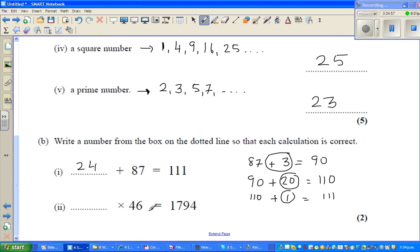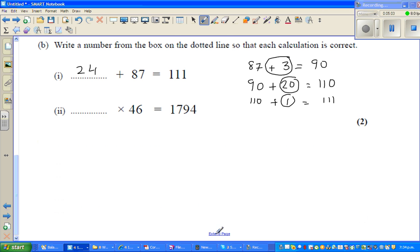What times 46 equals 1794? This dash equals 1794 divided by 46. If you're allowed a calculator, it'll be good to use one. For example, what times 4 is 12? We know it's 3 - you get the answer by dividing 12 by 4, which is 3.